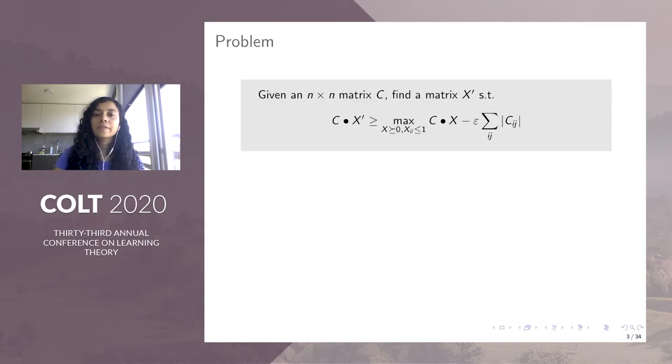We start with the problem statement. Given an n by n cost matrix C, we want to maximize the trace of C times X, where our constraint is that the matrix X should be PSD, and all its diagonal entries should be at most one. We want to solve this problem to epsilon accuracy as shown here.